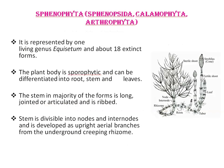Next is Sphenophyta. Sphenophyta includes both fossil plants and living plants, represented by one living genus — Equisetum — and about 18 extinct forms. The body is sporophytic and differentiated into root, stem, and leaves. The stem in majority of forms is long, jointed or articulated, and ribbed — having ridges and grooves, as seen in Equisetum. The stem is divisible into nodes and internodes, and develops as upright aerial branches from underground creeping rhizomes.